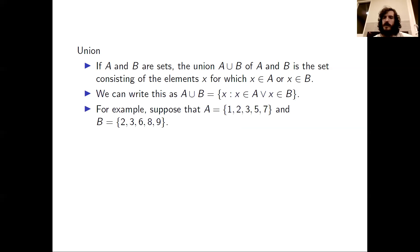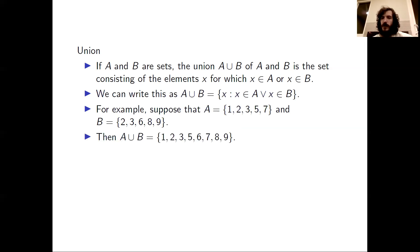Let's look at a simple example. Suppose that our set A consists of the elements 1, 2, 3, 5, 7. Suppose that the set B consists of the elements 2, 3, 6, 8, 9. The union of A and B consists of any elements that are in A or B, which means that its elements are 1, 2, 3, 5, 6, 7, 8, 9.